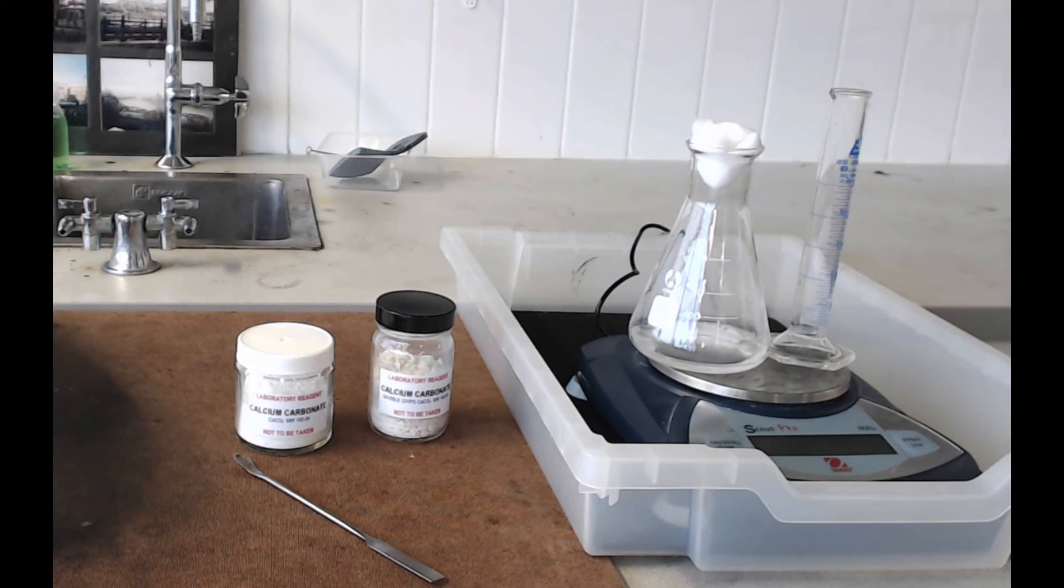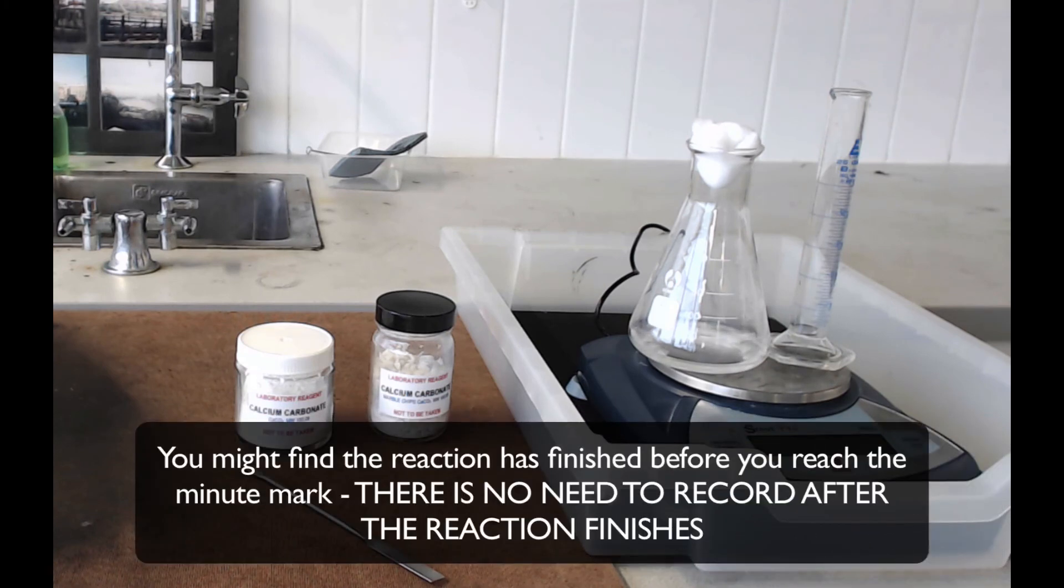All we need to do is record how much mass is lost every 10 seconds from this flask, up until we reach about a minute. Once you get to a minute, you can take all your equipment off the balance and record your results.